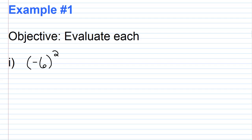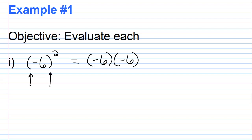For example number one, the objective is to evaluate each expression. For part one, we have (-6) squared. Notice we have parentheses around the base, so the base is negative 6. To square negative 6, you multiply negative 6 by itself — two factors of negative 6. Negative 6 times negative 6 equals 36.